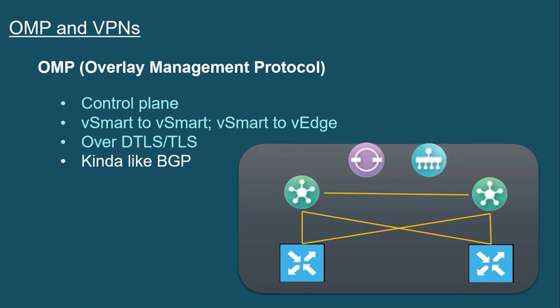The vSmart controller is not a route reflector. All of this technology works great with BGP, but you will see these comparisons made. I have talked to students that are confused and they think it is BGP doing the transport for this control plane intelligence. But no, it is a brand new invention from Viptela — it is the OMP, the Overlay Management Protocol.